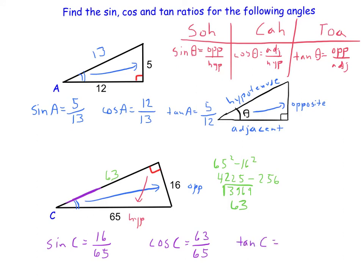Tangent. Tangent ratio. SOHCAHTOA. TOA is opposite, so it opens up to the 16, over the adjacent, which in this case is 63. And that one does not reduce either.